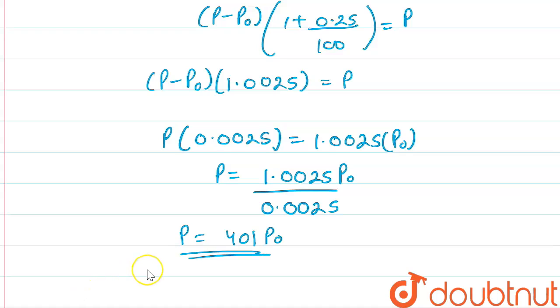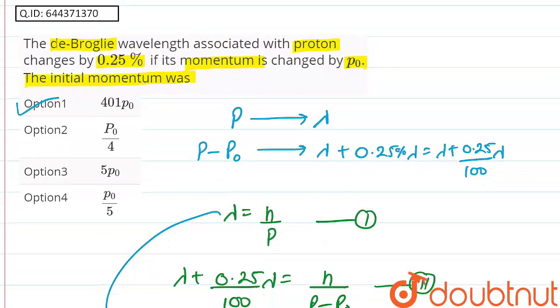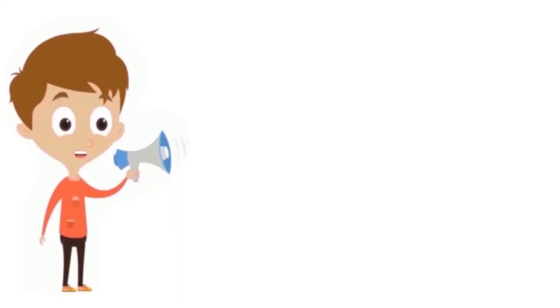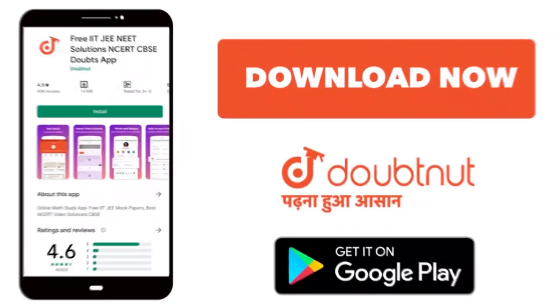So which option is correct? Option 1 is the correct option: p equal to 4.01 p0. Thank you for watching. For class 6 to 12, IIT-JEE and NEET level, trusted by more than 5 crore students. Download Doubtnut today.